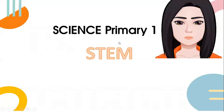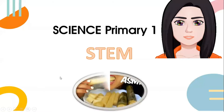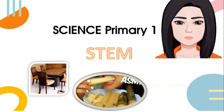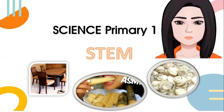Welcome to science class for primary one with teacher. Today we're going to be talking about the stem. Sugar cane is one of the stems. The second one — these furniture — they are made from stem.